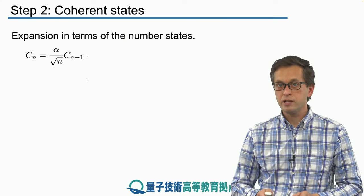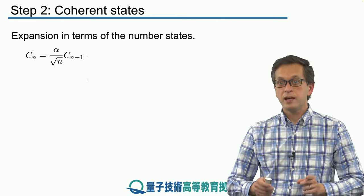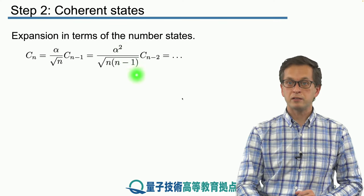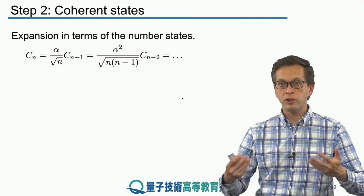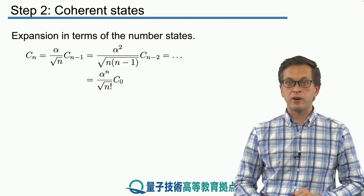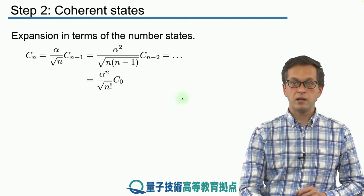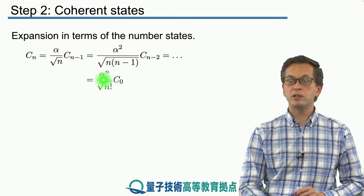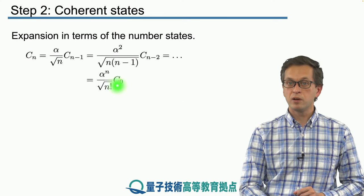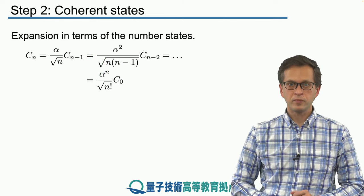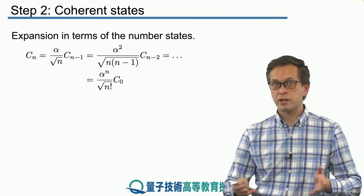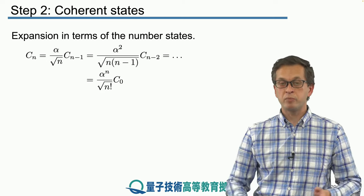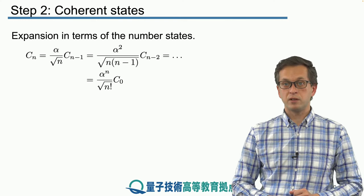But that's not all. We can re-express Cn minus 1 in terms of Cn minus 2 in the following way. We multiply by alpha divided by square root of n minus 1. And we can go on and on and on until we find an expression in terms of C0 and given here. So any probability amplitude Cn can be written in terms of C0 using this following fraction. The question now is, great, now we can write our expansion for the ket alpha, for our coherent state, where C0 appears in front of every number state. But what is C0?